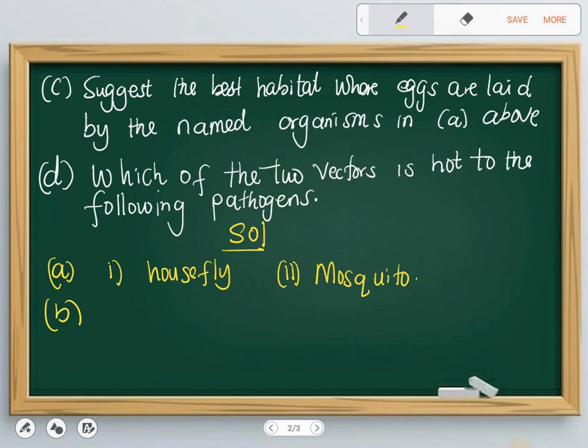F is the larva stage, and G is the adult stage.